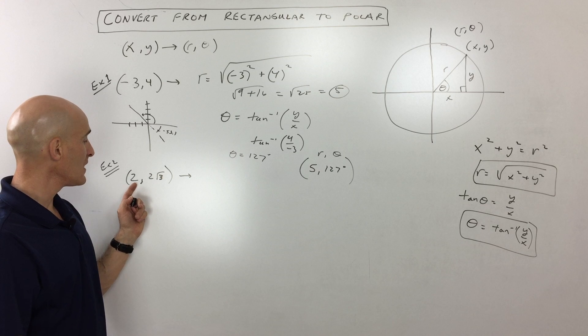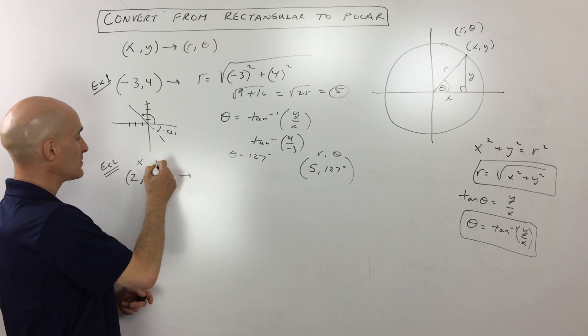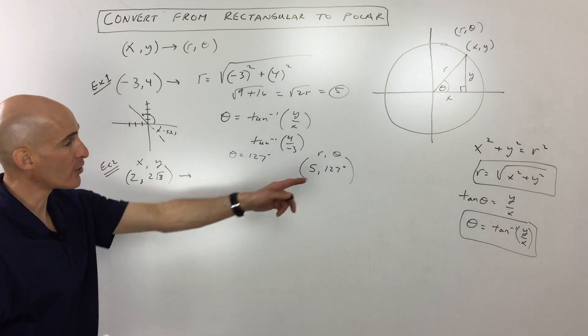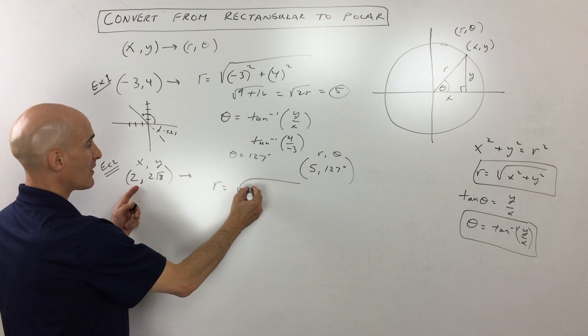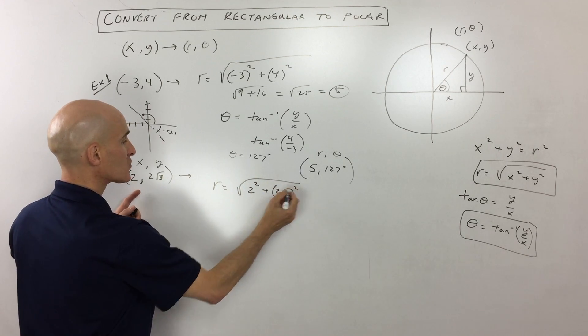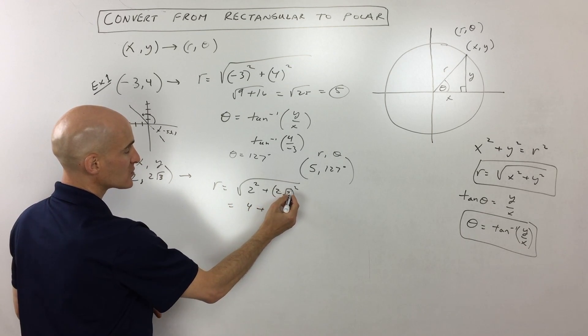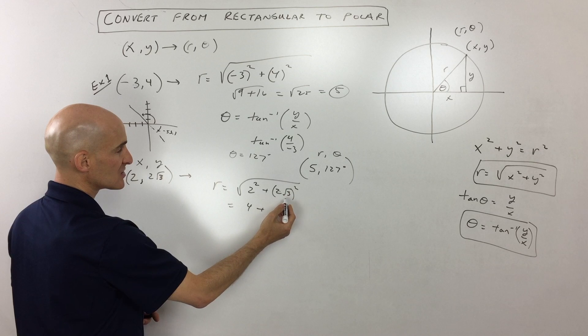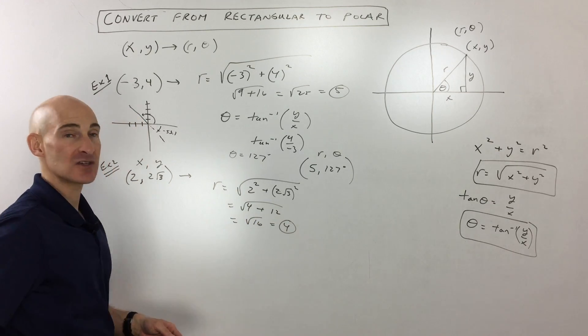Now for example number 2, they're giving us x and y, right? So 2 and 2 root 3. And we want to go to polar, r and theta. Let's use this formula. R is equal to square root of x squared plus y squared. Take the square root. So that comes out to 4 plus, 2 squared is 4. Square root of 3 squared, that's just going to give you 3 times 4. That's 12. Square root of 16 is equal to 4. So that's our radius.